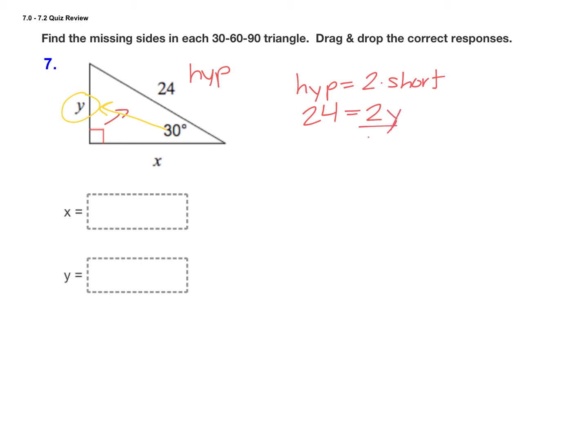Dividing by 2, we get y equals 12. So our short leg is 12. Now that we have the short leg, we can find x, the long leg. The long leg is the short leg times the square root of 3, so x equals 12 times the square root of 3. Drag and drop that into the answer boxes.